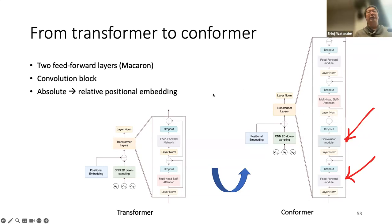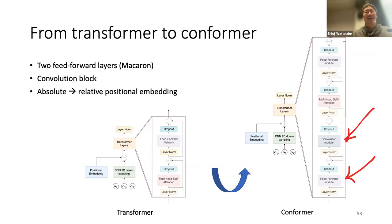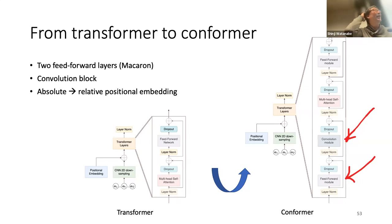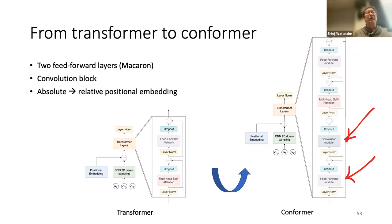In terms of parameters, the right side — with the macaron feed-forward part — has more parameters. The feed-forward part increases model parameters quite a lot, so Conformer generally has twice as many parameters as the Transformer. But with this Conformer extension we usually get very good performance improvement.